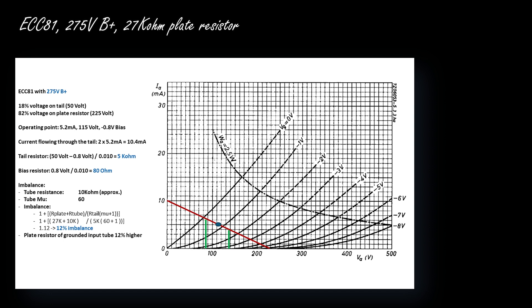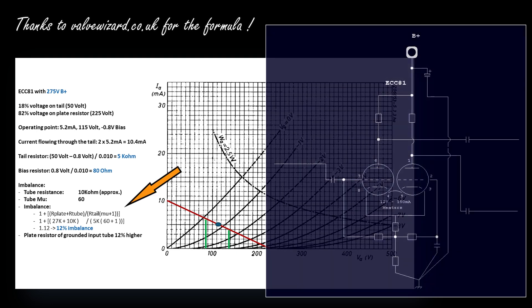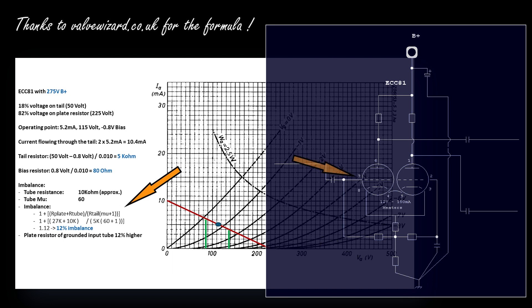An interesting calculation concerns the balance between the two sections. There is a formula — credit to the Valve Wizard website — showing that balance depends on the tail resistor: the higher the tail resistor, the better the balance between the two sections; and the lower the plate resistor and tube inherent resistance, the better the balance. With a plate resistor of 27 kilohms, a tube inherent resistance of approximately 10 kilohms, a tail resistor of 5 kilohms, and a mu of 60 for the ECC81, we find a 12% unbalance, which is pretty good.